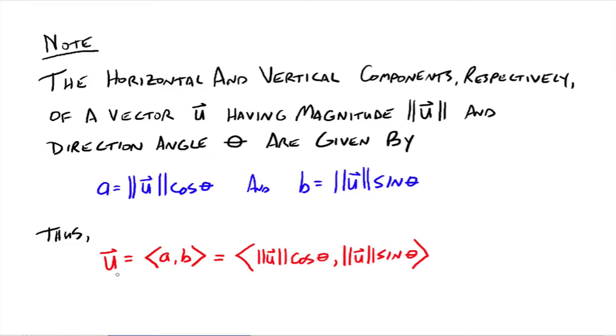So your vector, from the last video we had the vector u was equal to a comma b. So now all we're saying is that a can be thought of as the magnitude of u times the cosine of the direction angle, and b is the magnitude of u times the sine of the direction angle. So if we know the magnitude and the direction of the individual angle, then we can find the actual horizontal and vertical components.